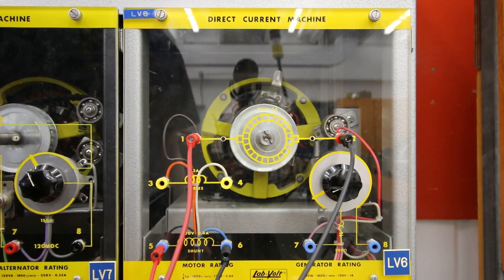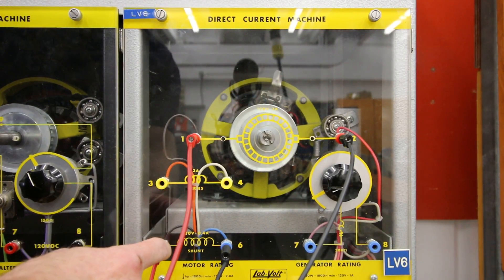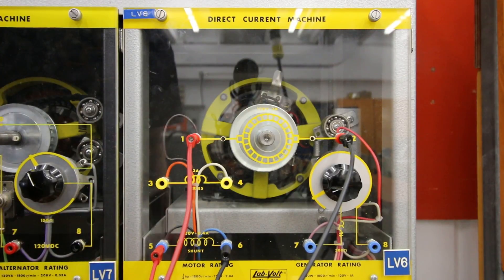Okay, so this is the shunt motor. We'll bump this guy. We now have positive to F1, positive to A1, and it's going in a clockwise direction.